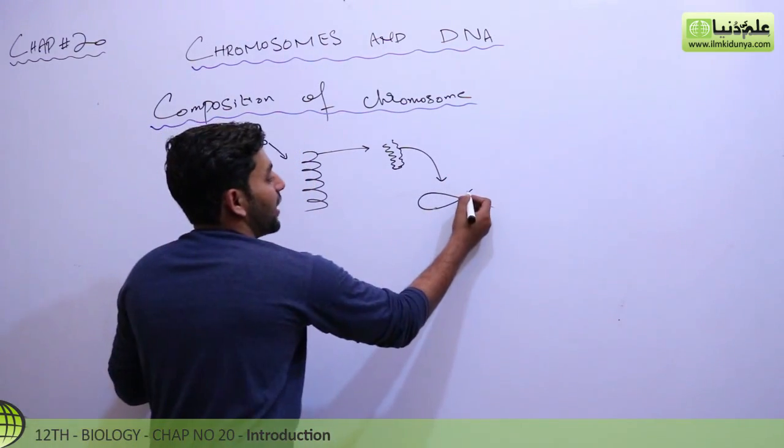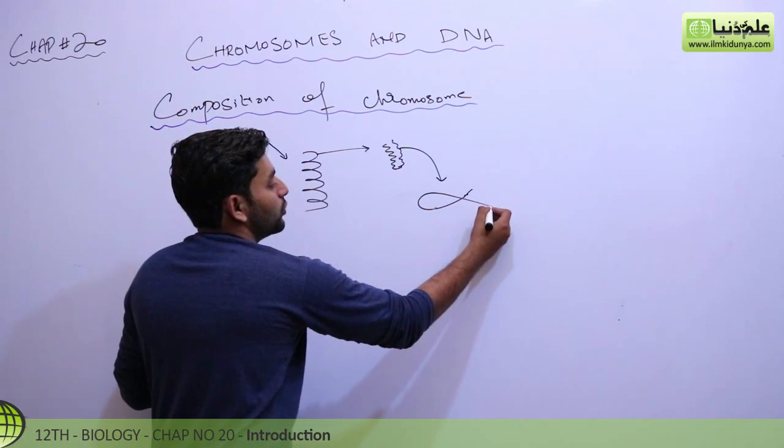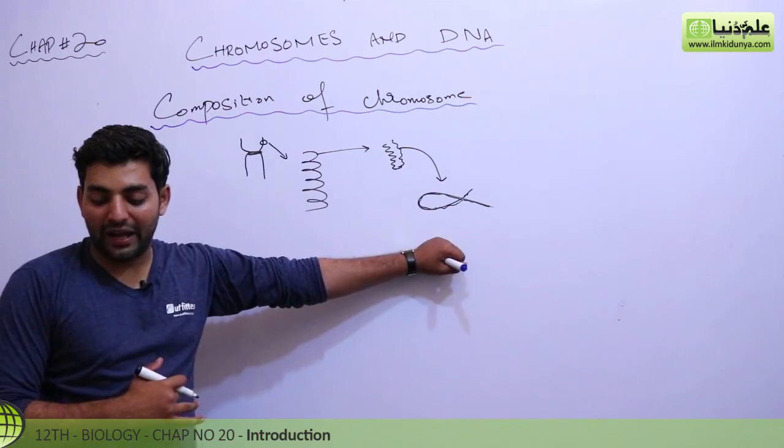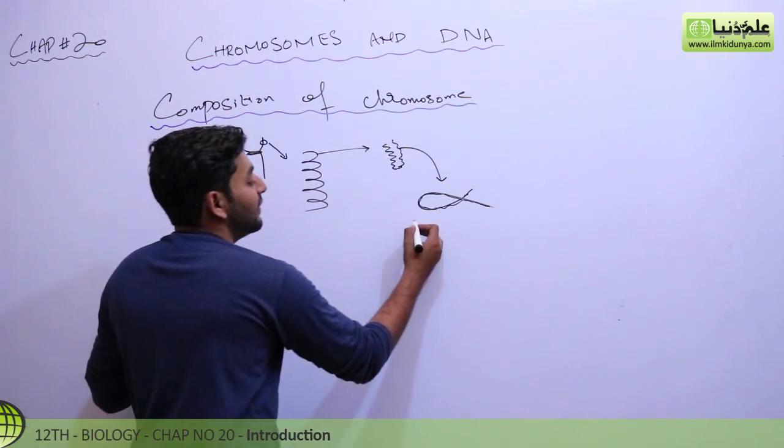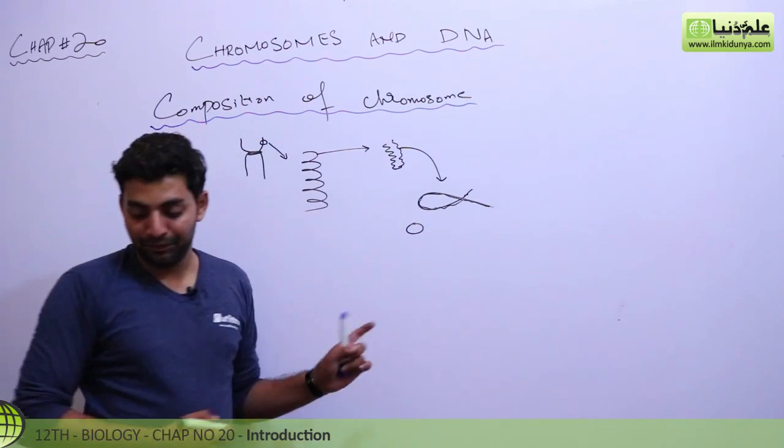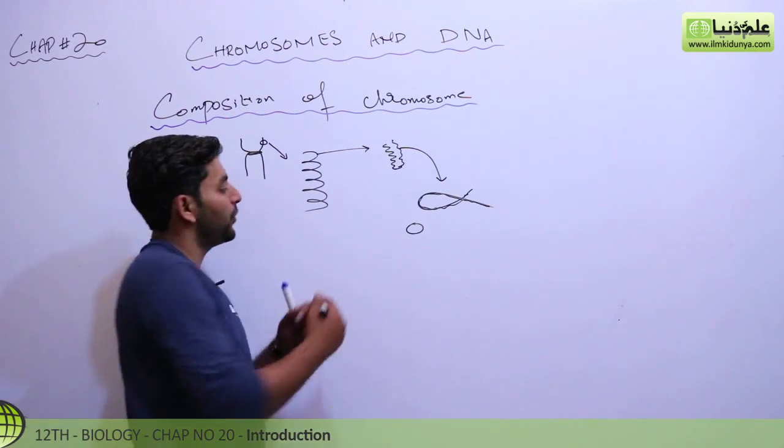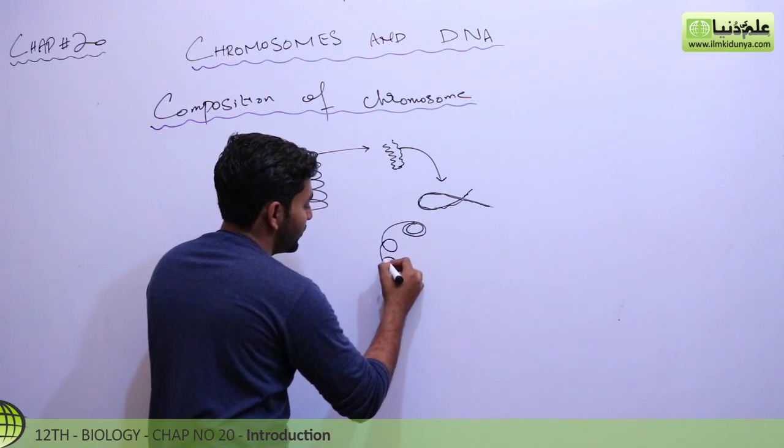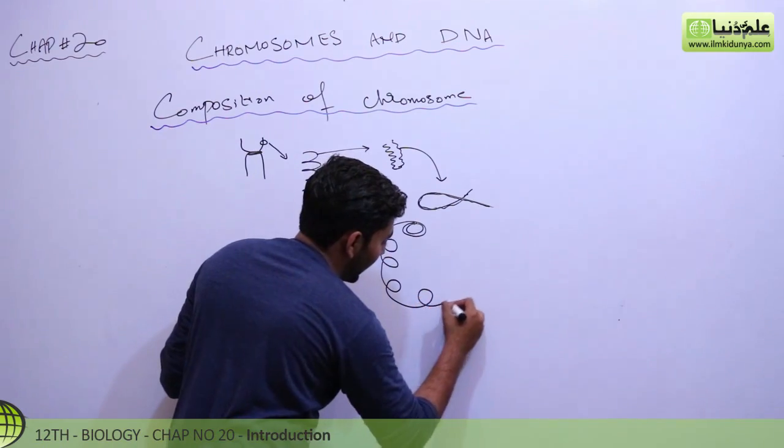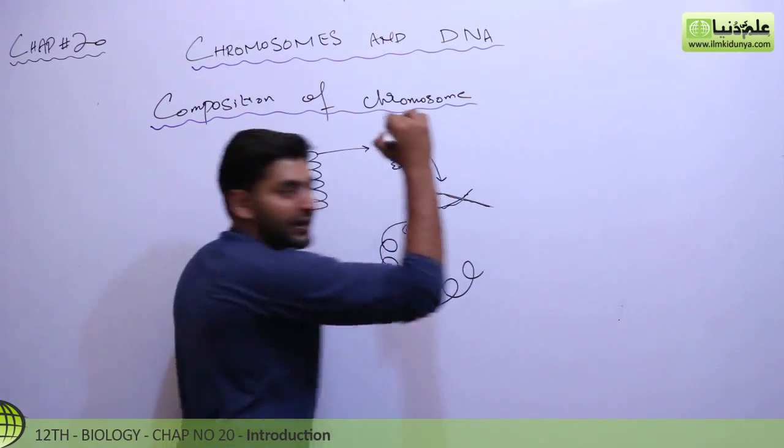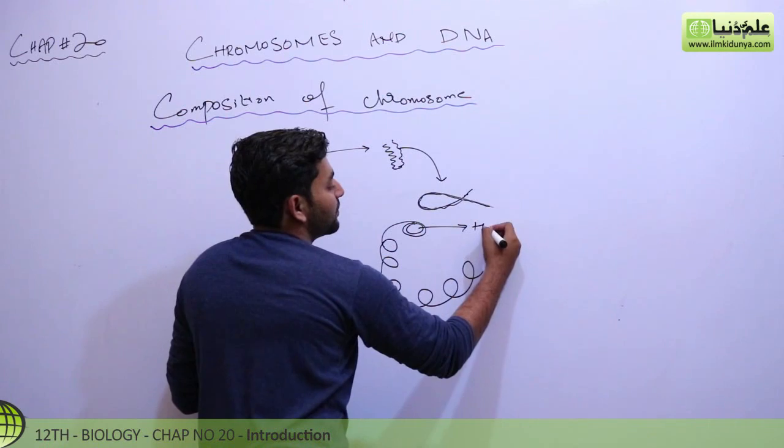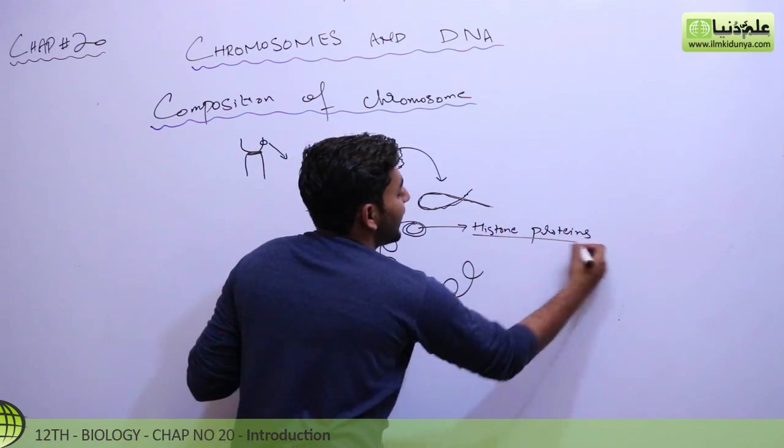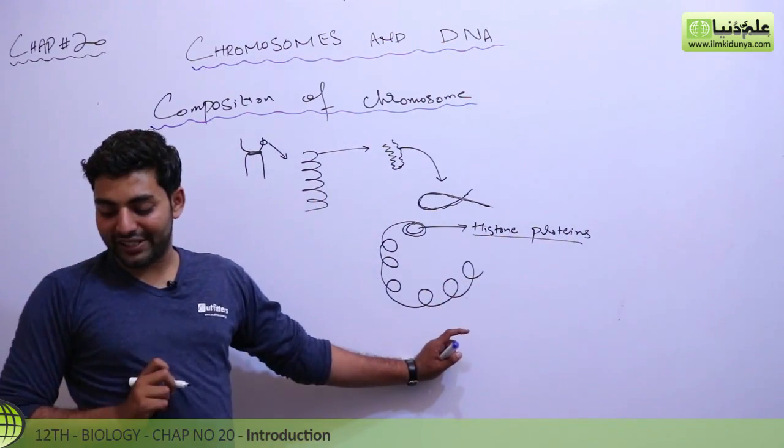The chromatin fibers are made of protein and DNA. When you examine it, inside the centromere you have histone proteins. DNA winds around histone proteins: DNA, histone protein, DNA, histone protein, DNA again and again. This creates histone proteins with DNA wound around them.